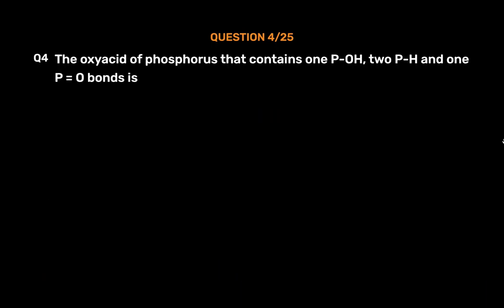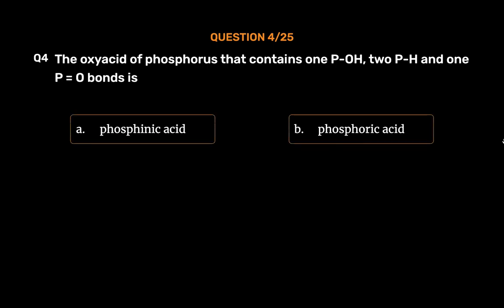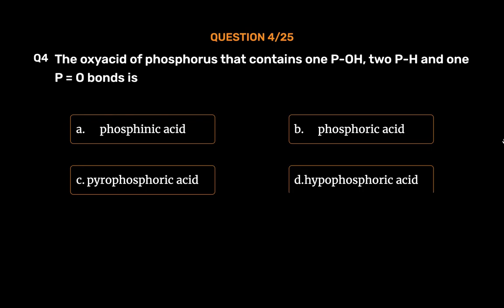Question number 4. The oxyacid of phosphorus that contains 1 P–O, 2 P–H and 1 P=O bonds is: Option A, phosphenic acid; Option B, phosphoric acid; Option C, pyrophosphoric acid; Option D, hypophosphoric acid.